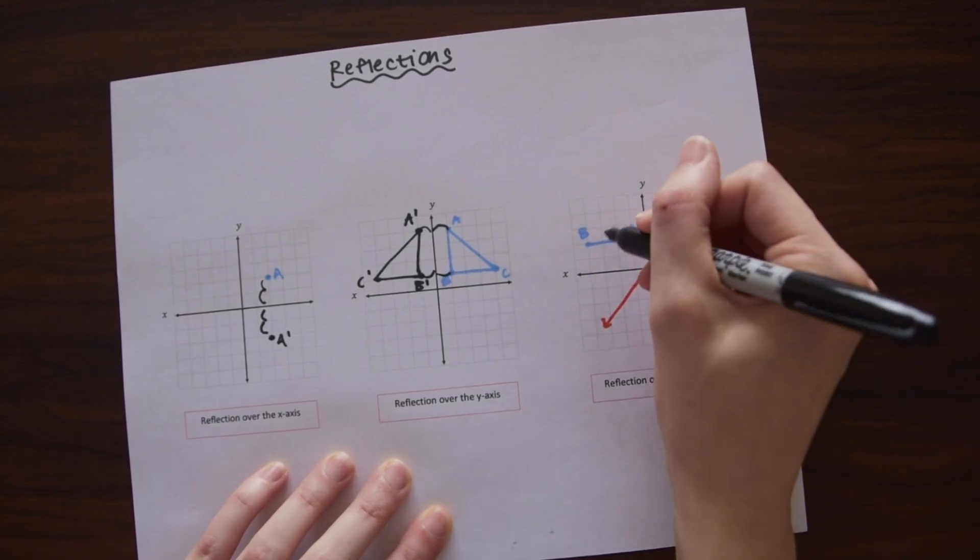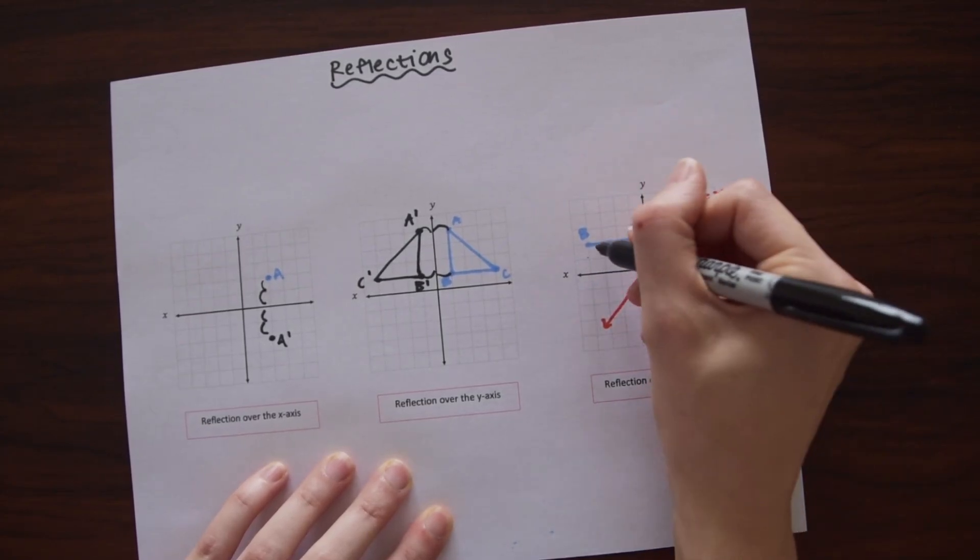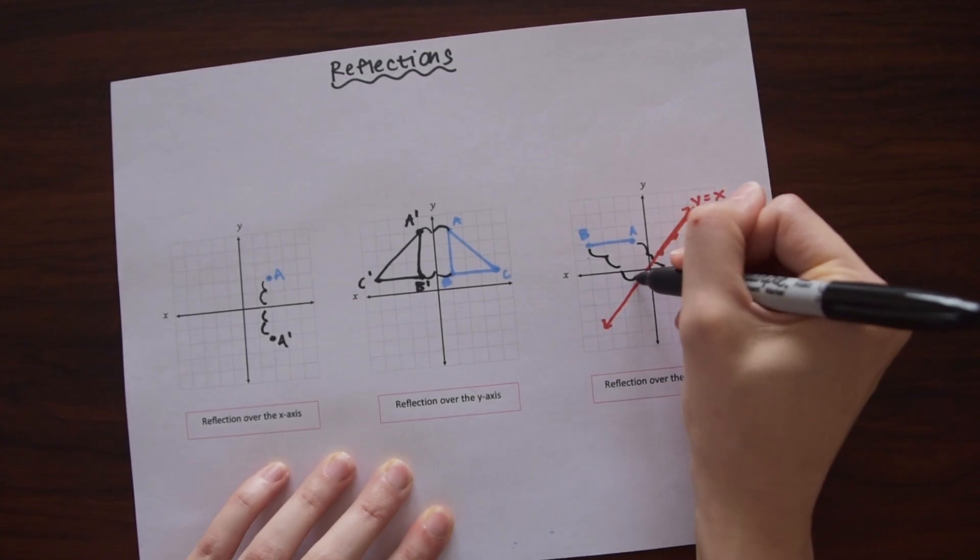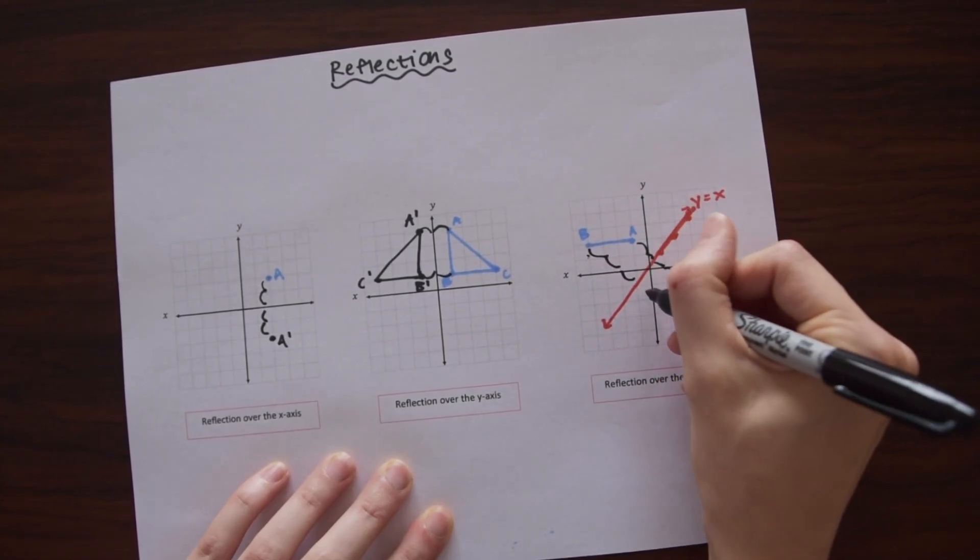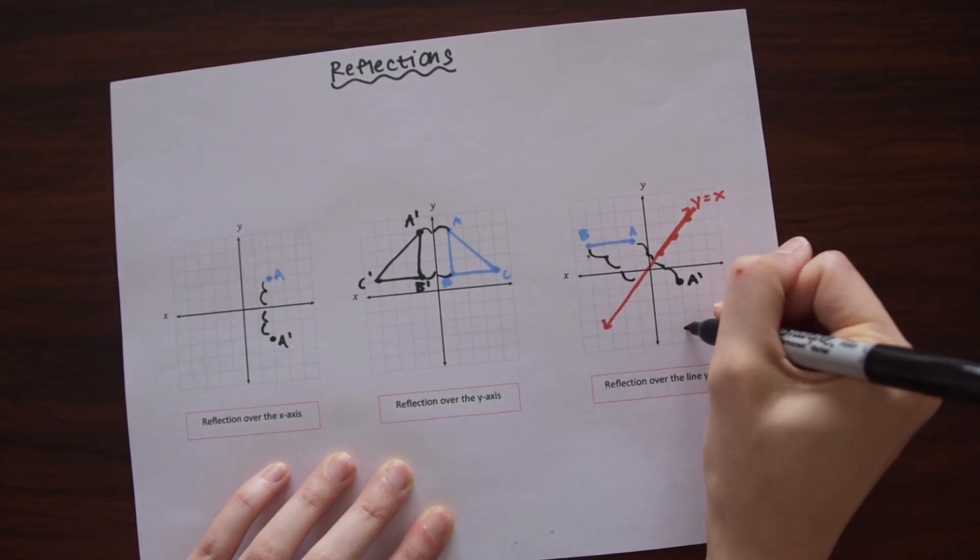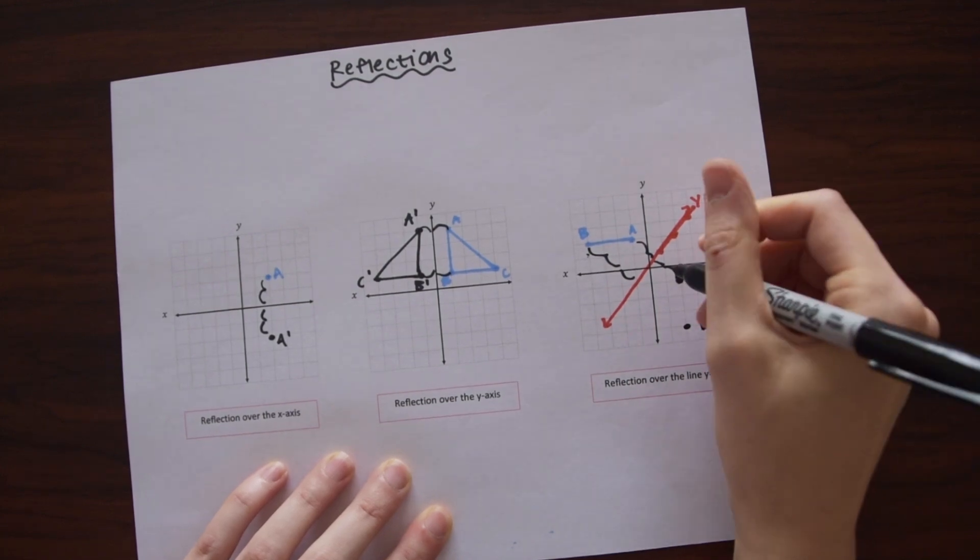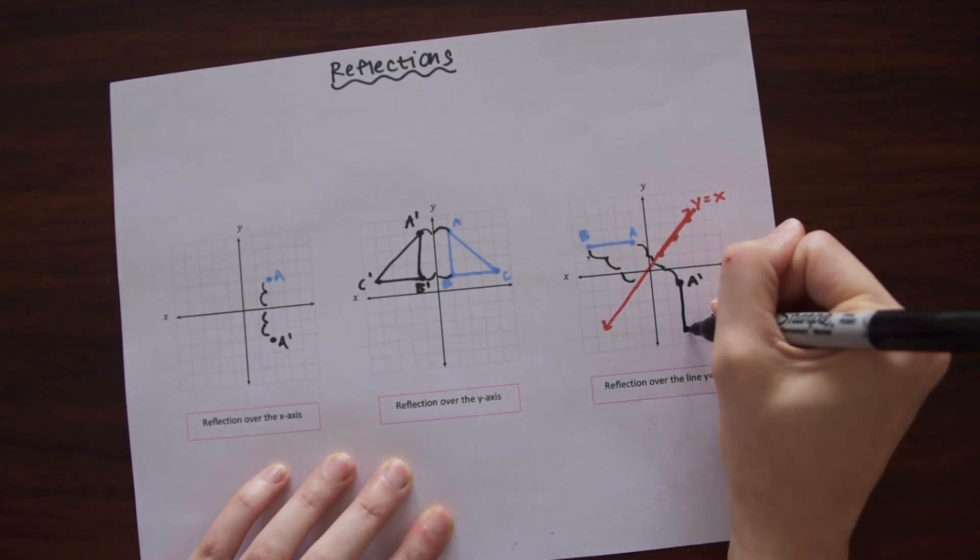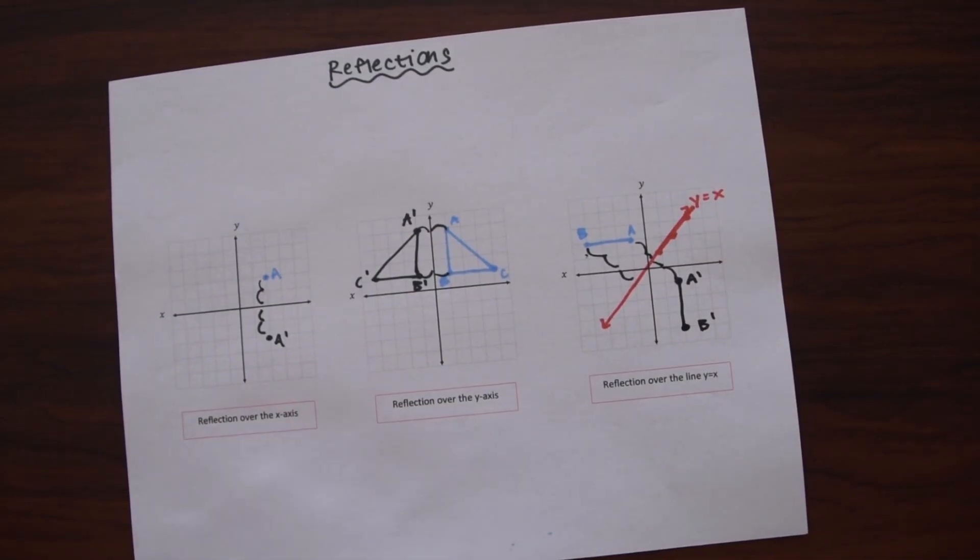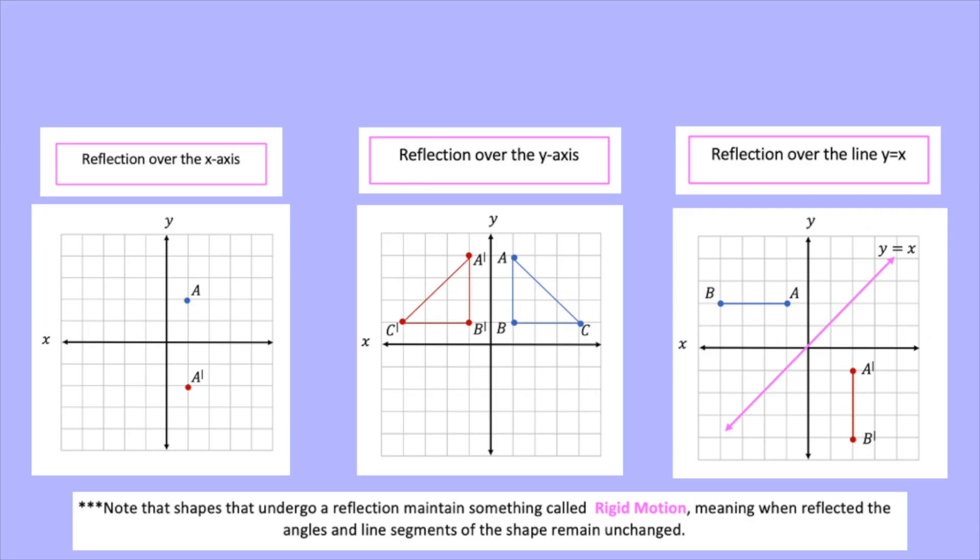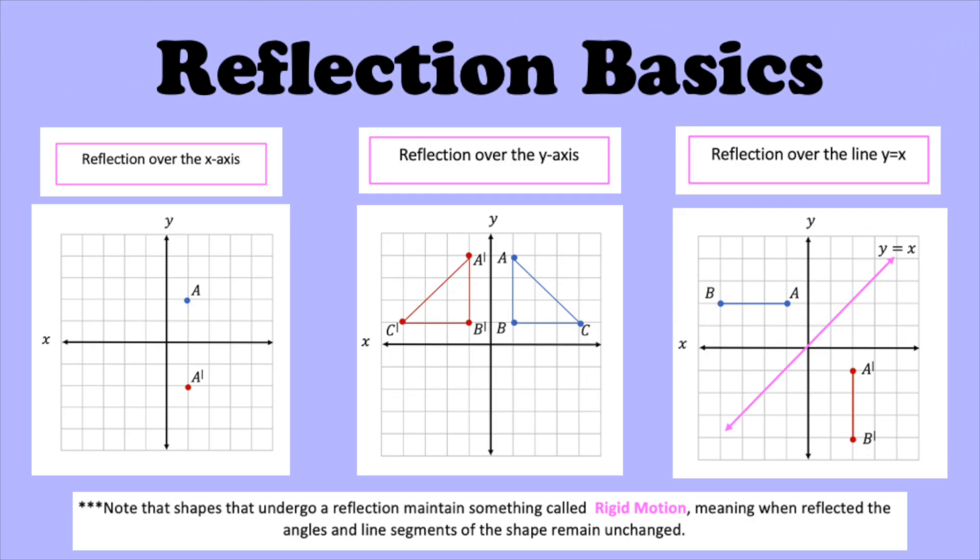And now for B, let's see how far this is from the line Y equals X. Point B looks like it's three units away. So we're just going to go one, two, three, and now we can connect A prime, B prime, our new reflected line segment. So these are just the simpler, the basic reflection rules over the X axis, the Y axis, and over the line Y equals X.